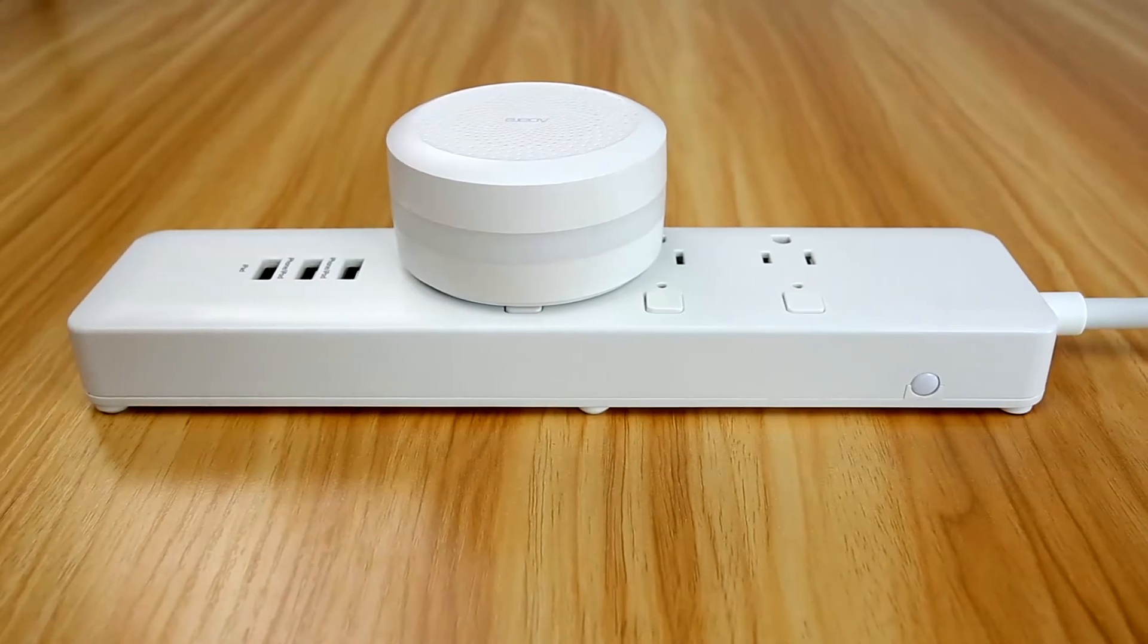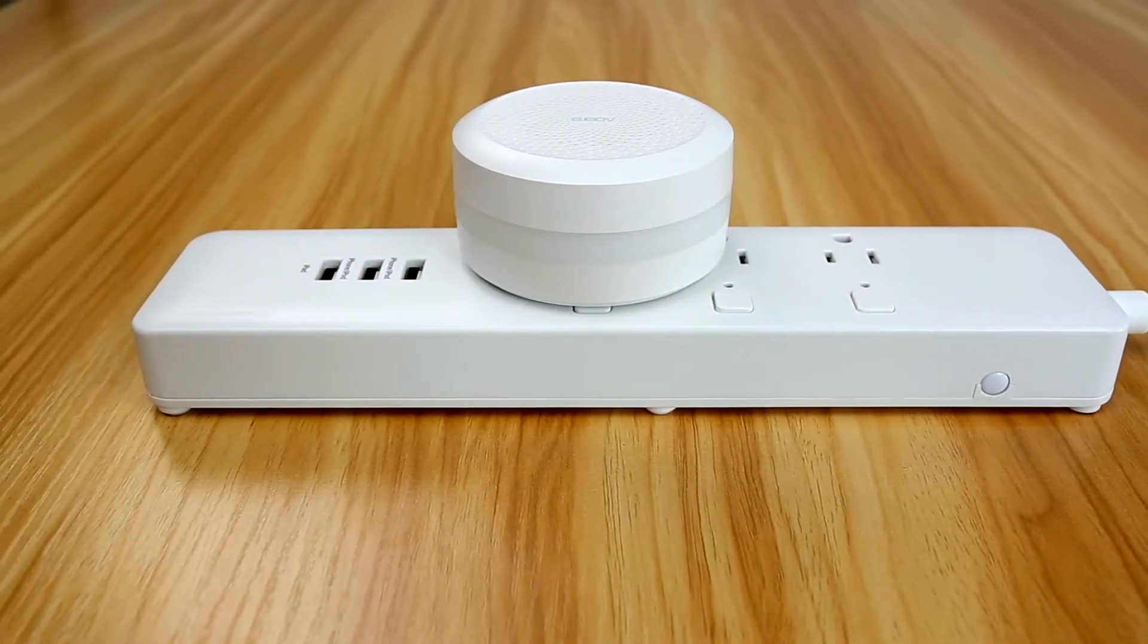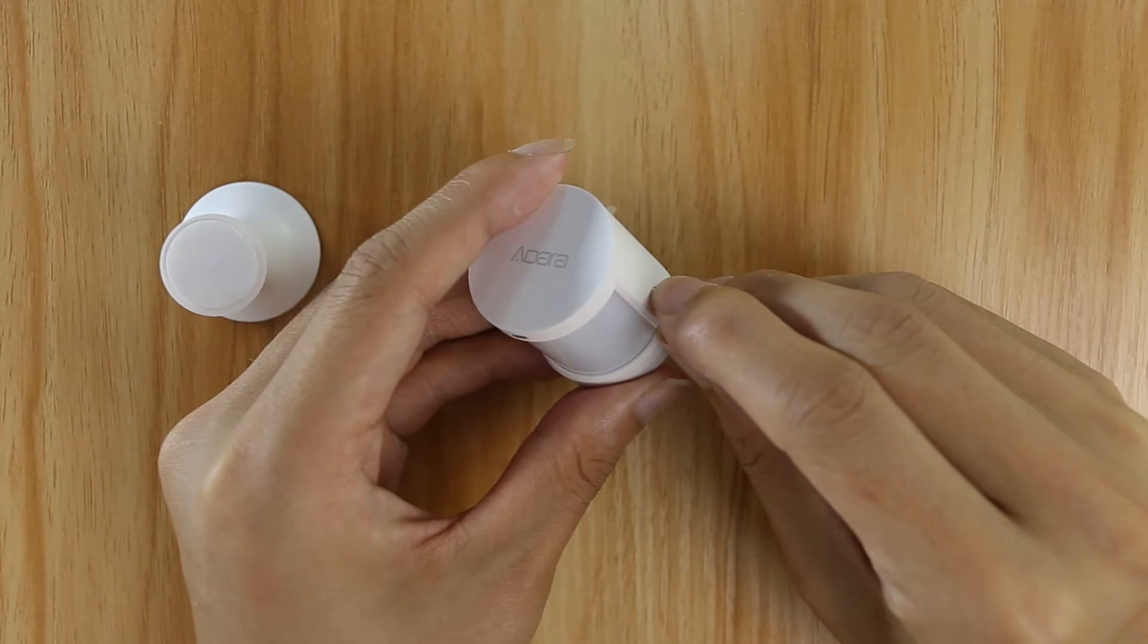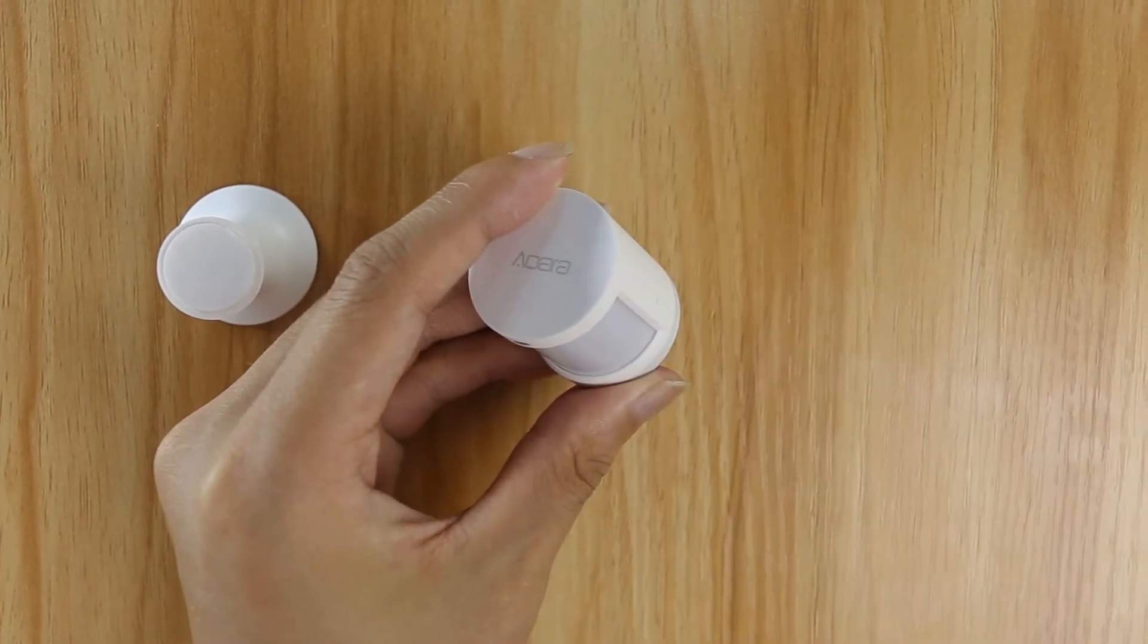If the hub makes voice prompts ready to connect to child devices, long press the reset button for five seconds until the blue light blinks three times and then release.